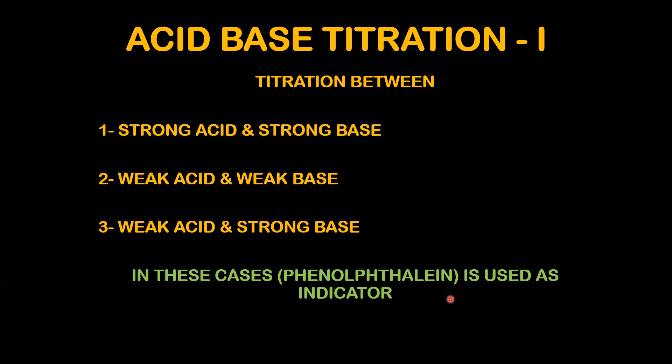A special thing is that phenolphthalein is used as an indicator. In acid-base titration, you add a third substance — the indicator — to the solution. The indicator works by changing color at the point of titration. Phenolphthalein is used as an indicator when the titration involves a strong acid and strong base.